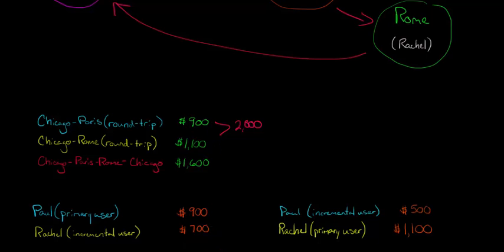Conversely, if Paul is the incremental user and Rachel's the primary, Rachel's got to pay the full freight of $1,100 that you would have to pay to visit her anyways just by herself, and Paul only has to pay $500.